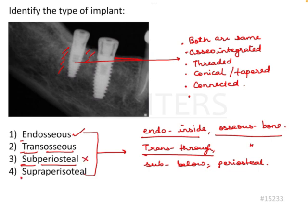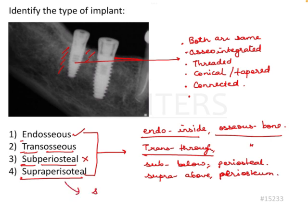The periosteum is located here, so these implants are definitely not below the periosteum — they are not subperiosteal implants. For supraperiosteal implant, 'supra' means above the periosteum. These are also not above the periosteum; if they were above the periosteum they would be in soft tissue, which is not correct.